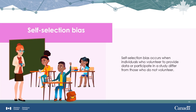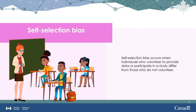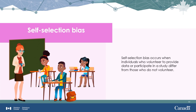Self-selection bias occurs when individuals who volunteer to provide data or participate in a study differ from those who do not volunteer. You might even say that self-selection bias is the exact opposite of non-response bias, even though they both contribute to inaccurate conclusions.